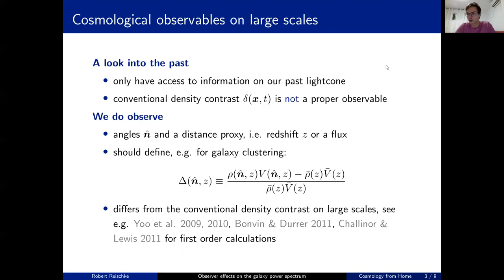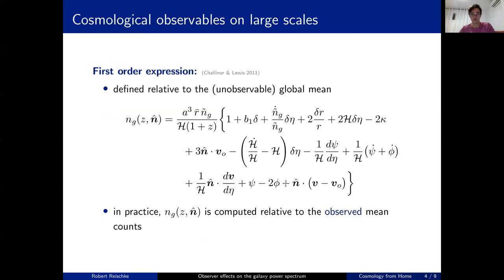For galaxy clustering, what you should do is not just take the matter density and modify it with the bias to relate the matter density to the galaxy density. What you should do is start from this expression here: the observed density of galaxies at an observed position and observed redshift is basically given by the local density at these observed positions by the local volume, which might be distorted to the Friedmann volume in this patch of the sky. Then you subtract the mean and divide by the mean. These things have been calculated to first and second order by several people.